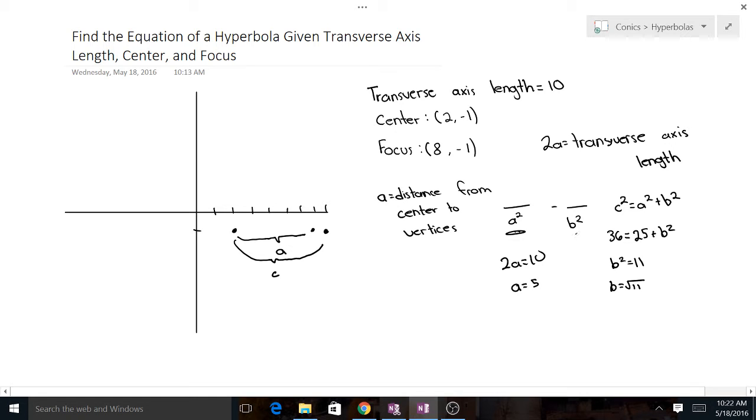Now we have both a squared and b squared, and we have our h and k, so we can write down the full equation. Let's think about which x or y is going to come first. This hyperbola would be opening like this, left and right, which means x has to come first. It's traveling along the x-axis, so x is going to come first.